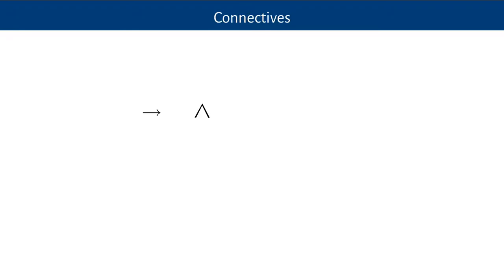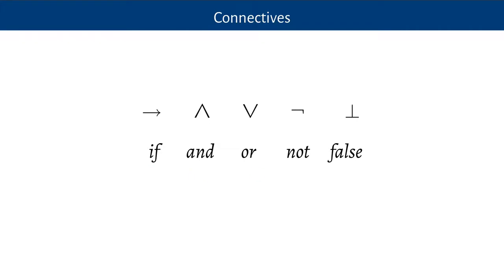We've used two connectives: the arrow, which stands for 'if', and the wedge, which stands for 'and'. We'll also use: the v-shaped thing (like an upside-down wedge) for 'or'; something that looks like a minus with a tail for negation; and an upside-down T for something false. So we've got connectives: if (conditional), and (conjunction), or (disjunction), not (negation), and the false proposition. These are used to connect statements to make more statements — they're the fundamental things in propositional logic. The rest of predicate logic is all about the quantifiers, names, and variables.